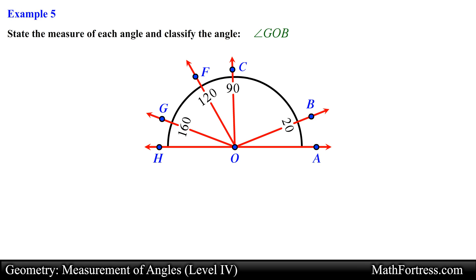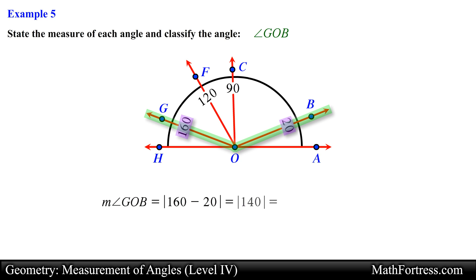Angle GOB. Ray OG is aligned with the 160 degree mark and ray OB is aligned with the 20 degree mark. Computing the absolute difference of these angles, we obtain 140 degrees. So this angle can be classified as an obtuse angle.